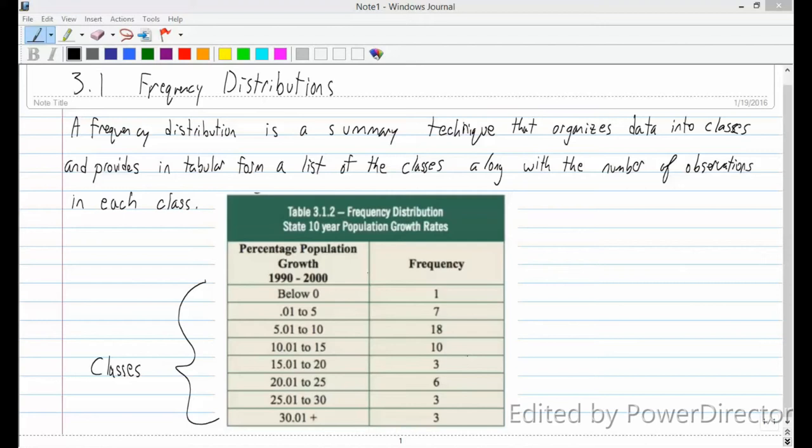And 3.1 just basically gives you four or five examples. I'll show you a different one, one that would just have percentages. And this is called a relative frequency distribution.